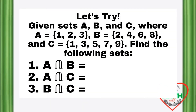Now let's try. Given sets A, B, and C, where A is equal to {1, 2, 3}, set B is equal to {2, 4, 6, 8}, and set C is equal to {1, 3, 5, 7, 9}. Find the following sets. I will give you 10 seconds to answer.